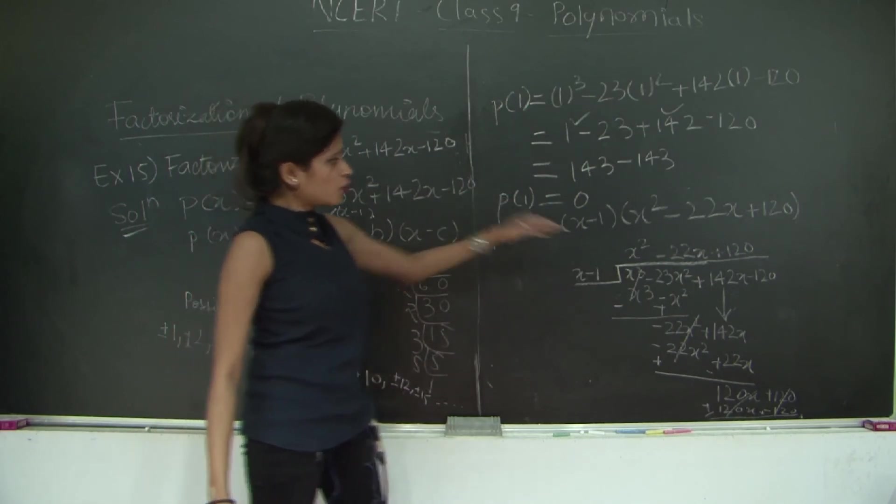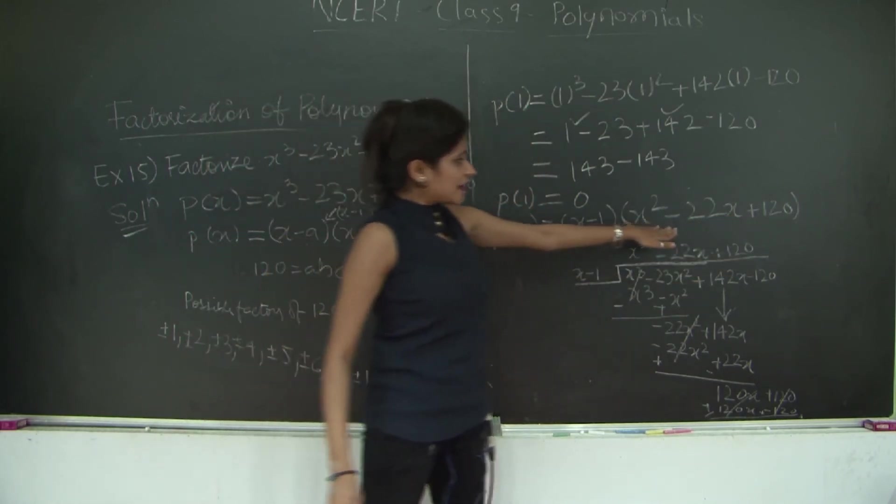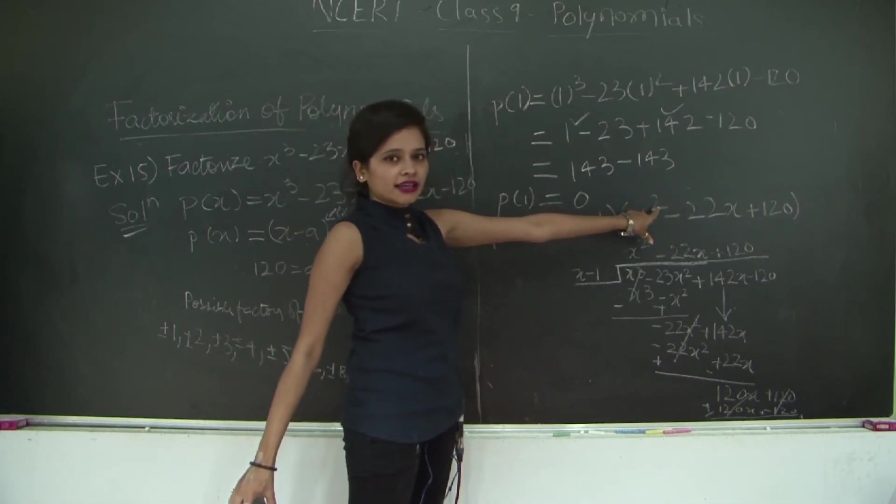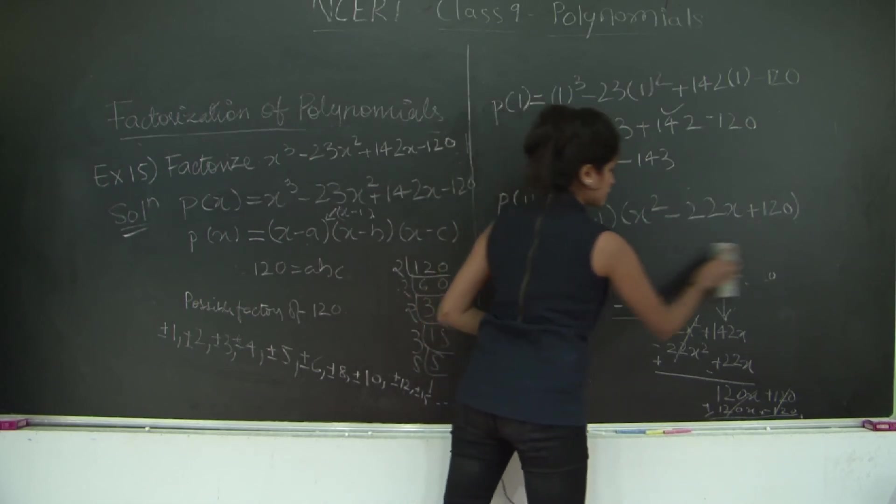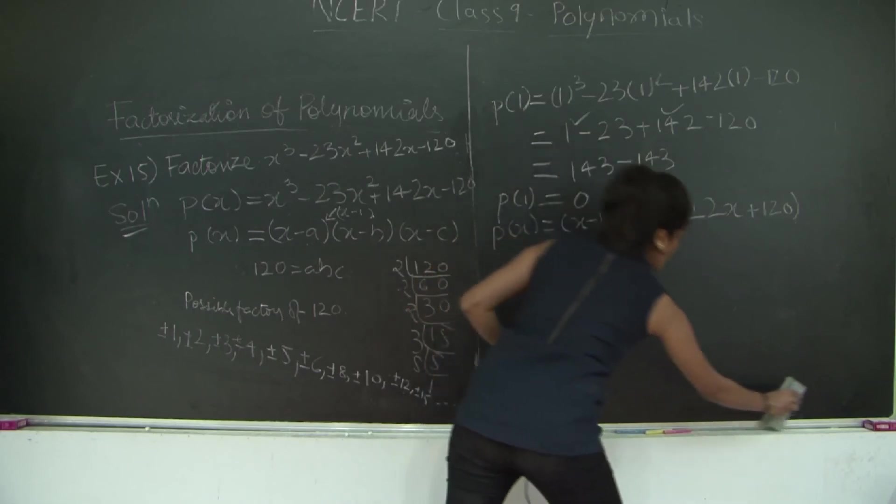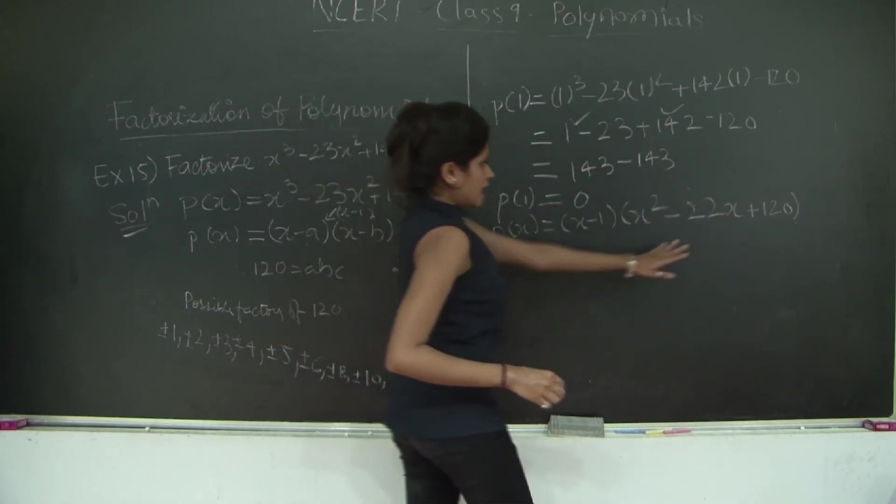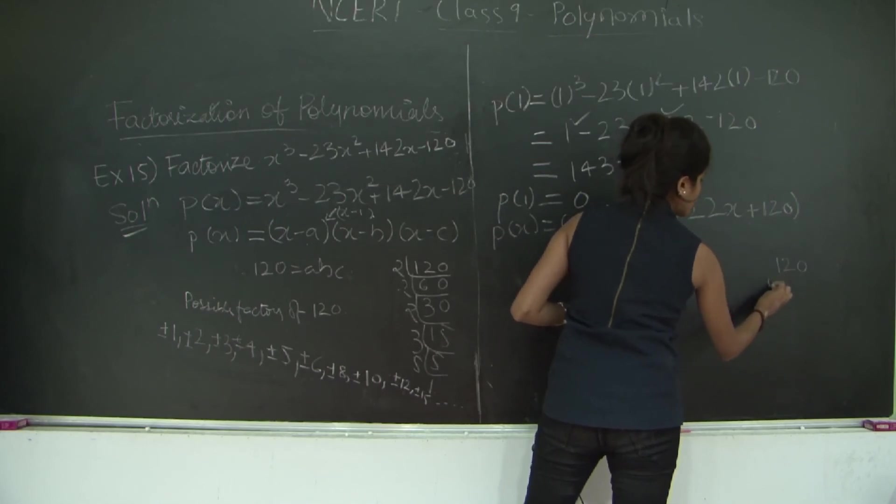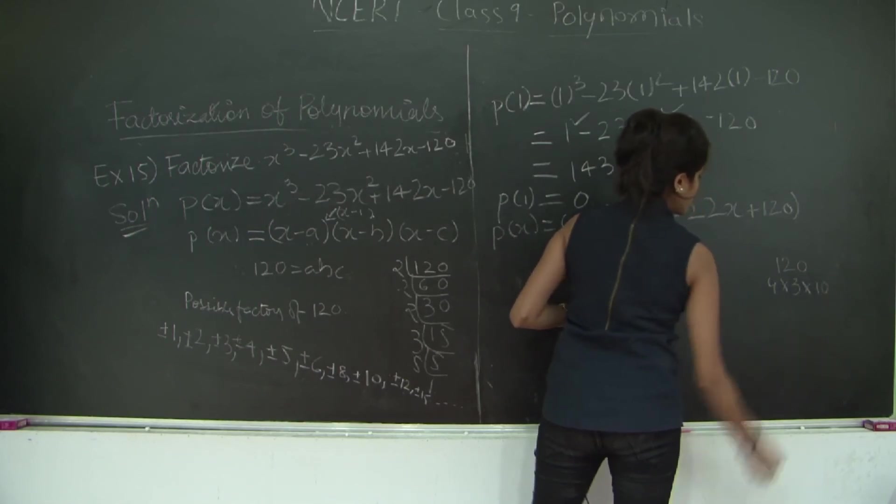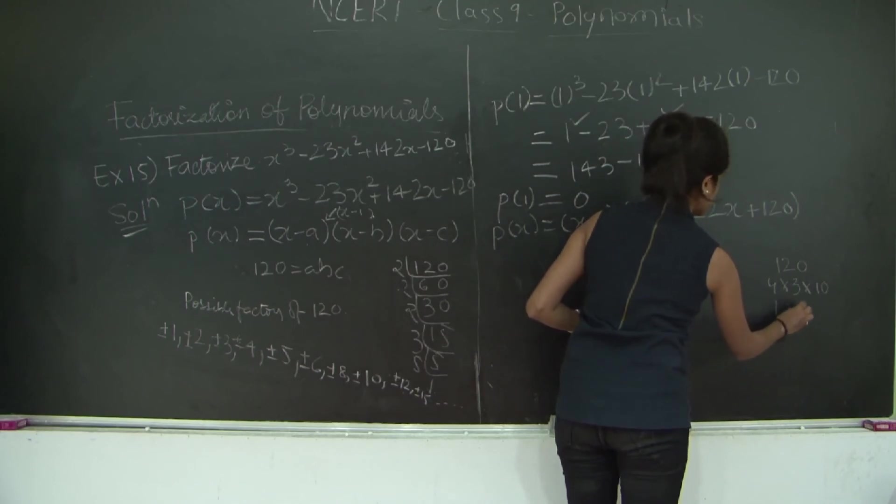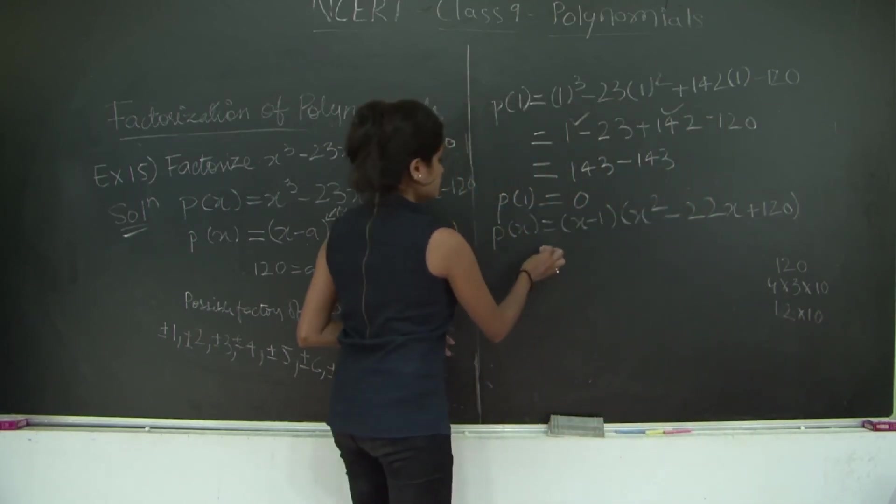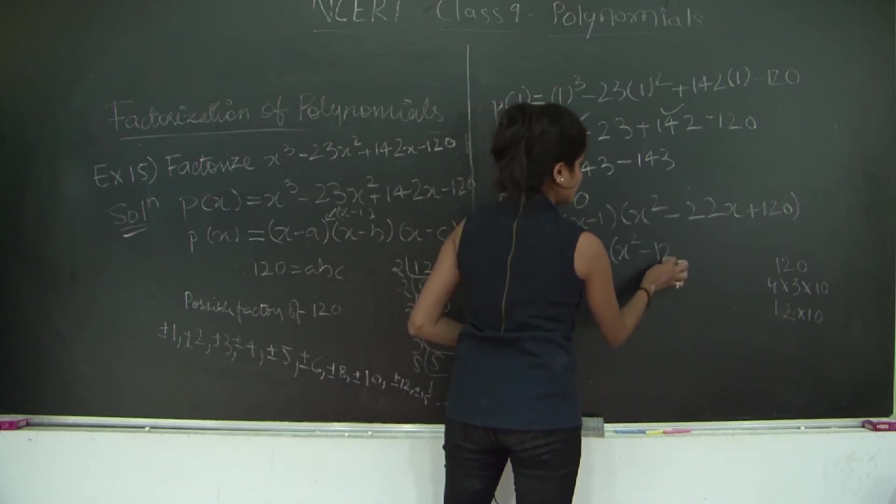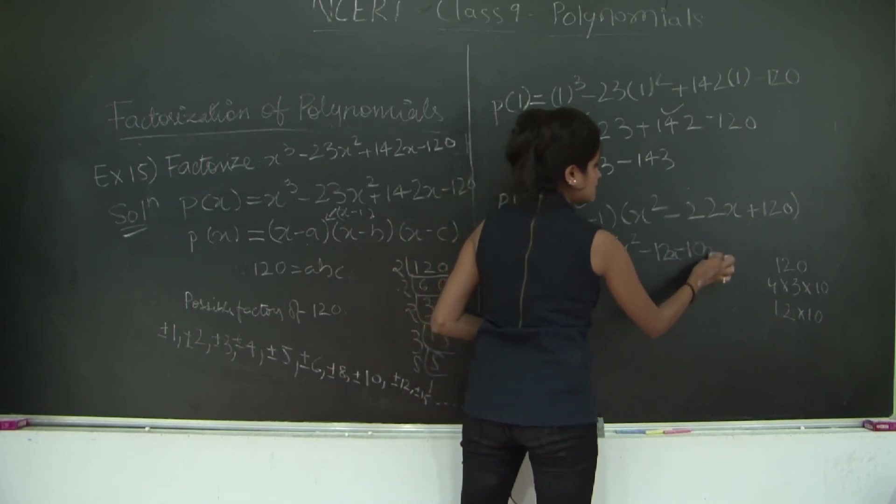Now we can simply factorize this polynomial by splitting the middle term, and then we will be able to find the two other roots. Why two roots? Because this is a quadratic equation. You have 120 as the product. You need to split 22. So 120 = 12 × 10.